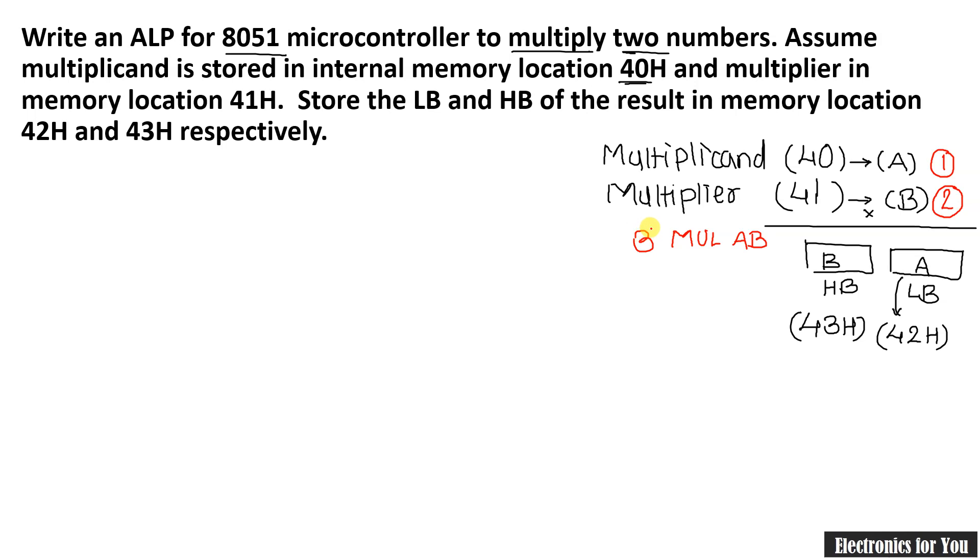Now our third step is to use the multiply instruction MUL AB. This is our third step. Now fourth step. Our result will automatically be at A and B and therefore to move this result to 42H is our next step. That is step number 4 and 43H is step number 5. But here is one problem.